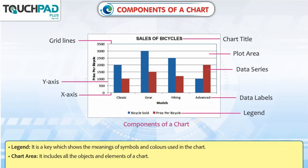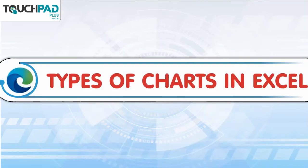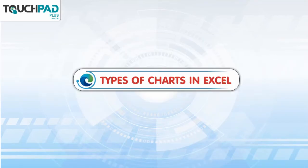Legend: It is a key which shows the meanings of symbols and colors used in the chart. Chart Area: It includes all the objects and elements of a chart.